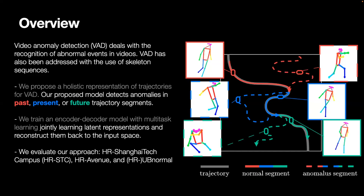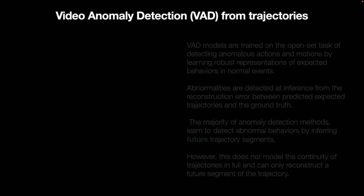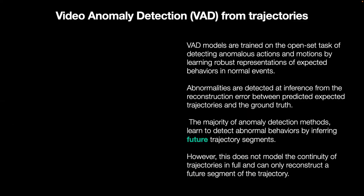We evaluate our approach on three anomaly detection datasets. In video anomaly detection, models are trained on the opposite task of detecting anomalous actions and motions by learning robust representations of expected behaviors in normal events.